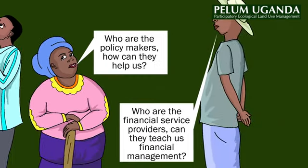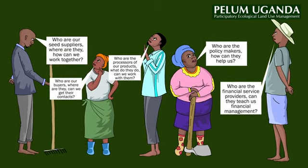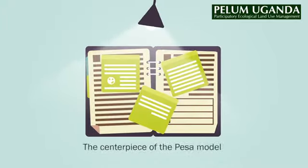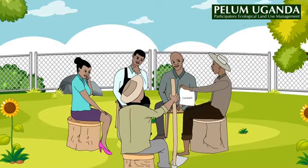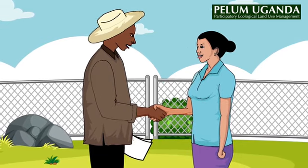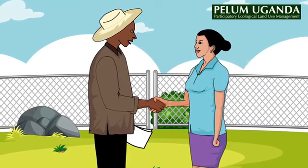It also identifies business opportunities and plans for stakeholder engagement. Number four: inadequate planning. The centerpiece of the PESA model is the development of a business plan in module four. Here, the model supports farmers to come up with their own business ideas and design models. This section introduces business plans and entrepreneurship skills such as communication, negotiation, contracting and closing deals, marketing and self-branding, and records keeping and financial planning.